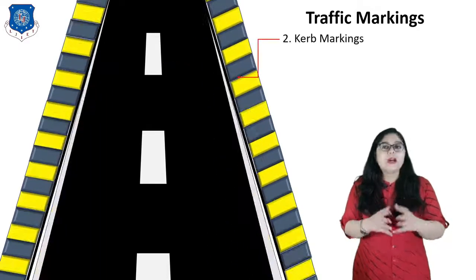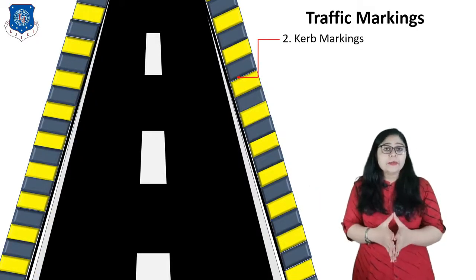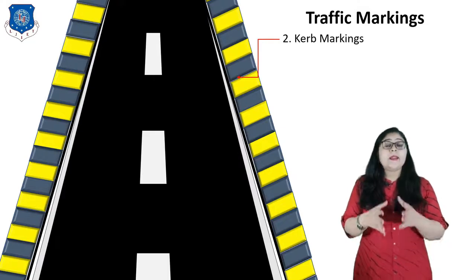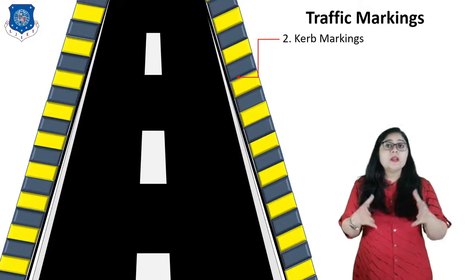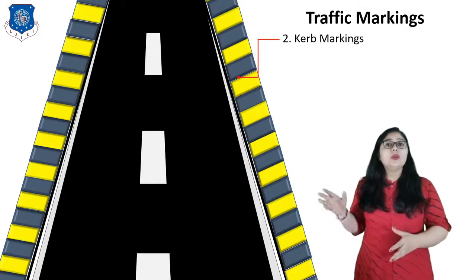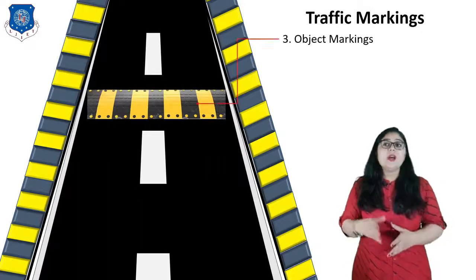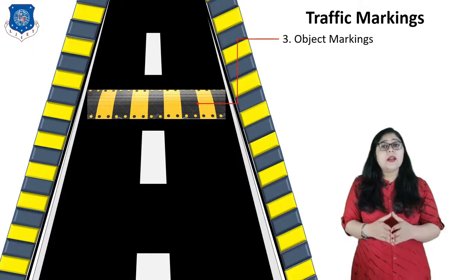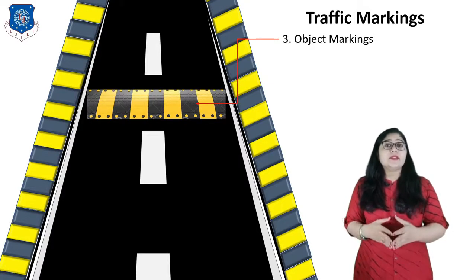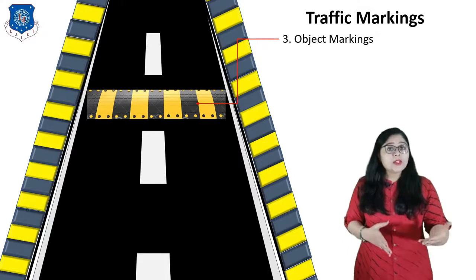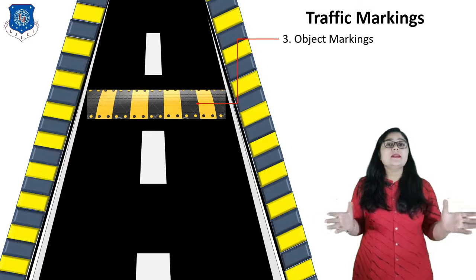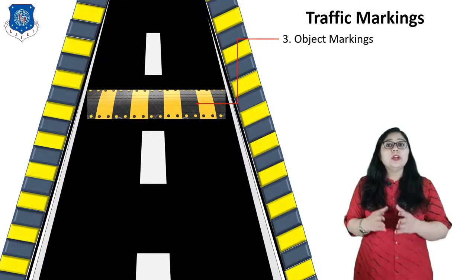Next type is curb marking. Black and yellow color strips are painted on the raised portion at the edge of pavement along the side of road, known as curbs. They may also be painted with alternative black and white strips. They divide pedestrian walkway and the roadway and help guide rainwater on the roadway to the drainage line. Next type is object marking. Sometimes objects adjacent to the carriageway may pose obstruction to traffic flow, such as subway piers, abutments, culvert head walls, small temples or trees. These must be marked to reduce accident rate.